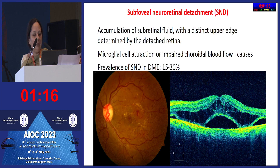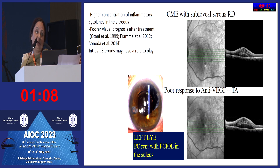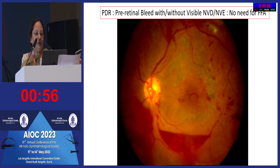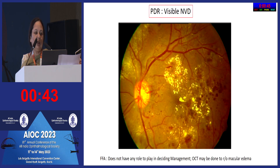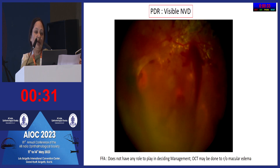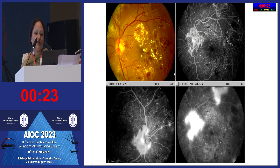Pre-retinal bleed on OCT: just proceed with PDR management. Advanced tractional detachment: no role for angiograms or OCT decision-making — simply refer to your vitreoretinal colleague. For obvious NVD, do not waste time on angiograms, as while waiting a couple of weeks the patient might bleed; manage directly. For subtle NVE where you are not sure, proceed with fluorescein angiogram. When in doubt — for example, a very fine NVD — confirm with angiogram.